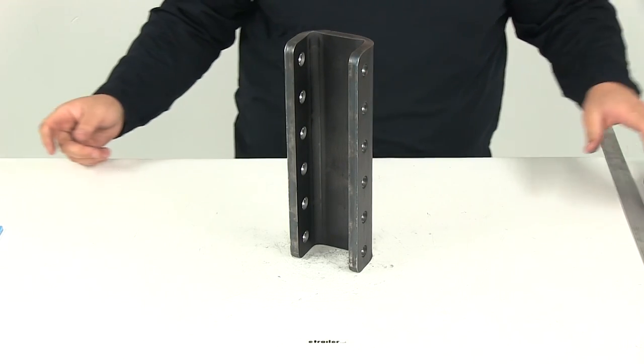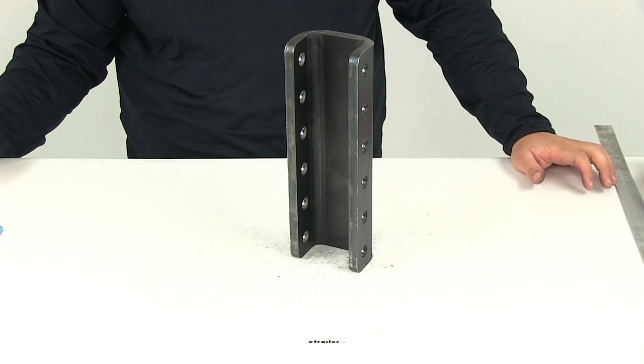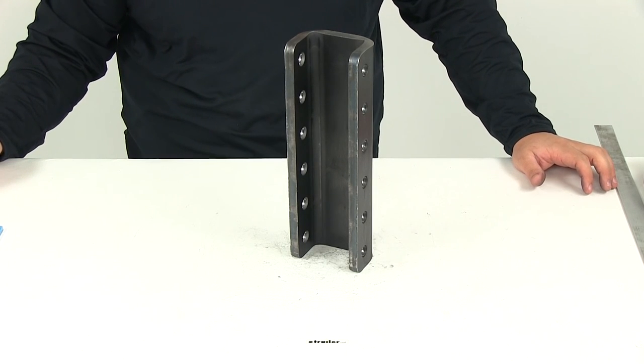That's going to do it for our review of part number DM66134, the Dimco six-hole adjustable channel bracket.